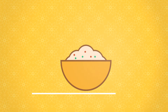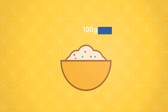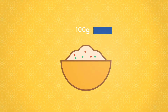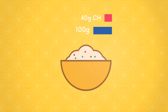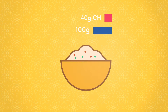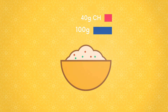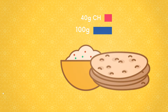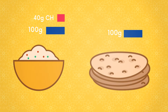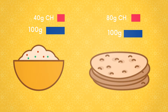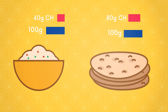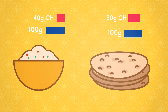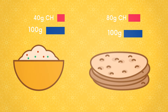This means that if we consume 100 grams of rice, we consume around 40 grams of carbohydrates. Whereas when we consume 100 grams of chapati or roti, we end up consuming about 80 grams of carbohydrates.